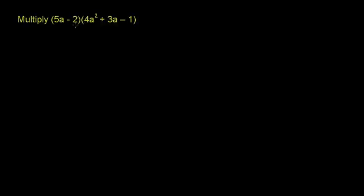Multiply 5a minus 2 times 4a squared plus 3a minus 1. Here we're multiplying a binomial by a trinomial, so the FOIL tool will not work here. It would only work if you were multiplying a binomial times another binomial.